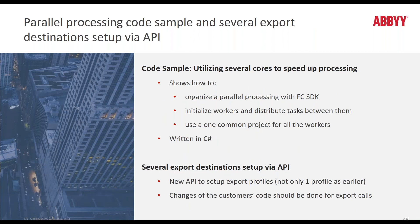Finally, two heavily requested new features are in this latest update. The first is an additional code sample that helps speed up processing, showing how to organize parallel processing with FlexiCapture SDK and how to set up and distribute tasks between workers using one common project. The second feature is the ability to set up multiple export destinations via API — previously only one export profile could be set up, but now you can set up as many as you would like.